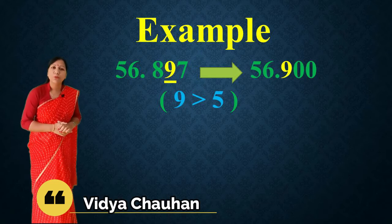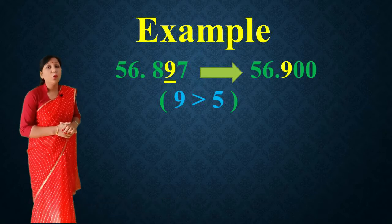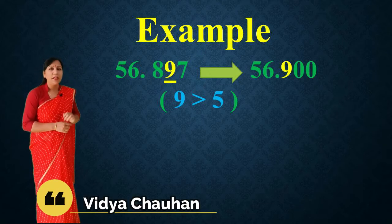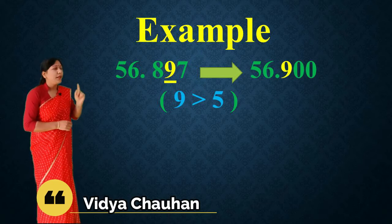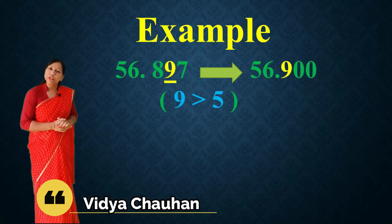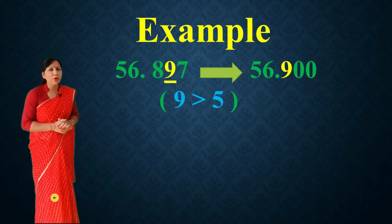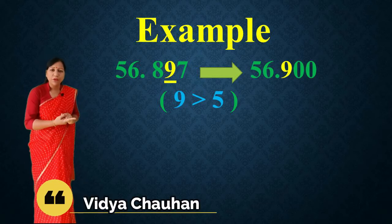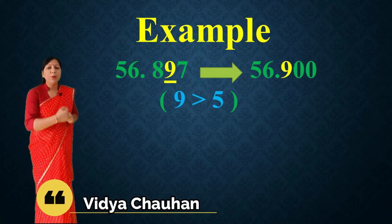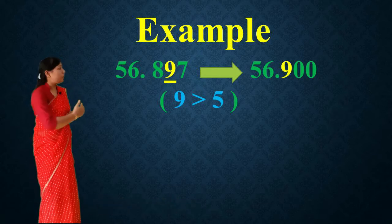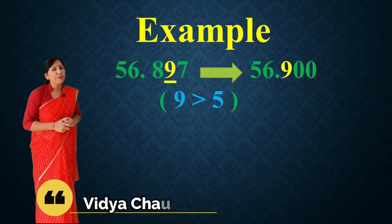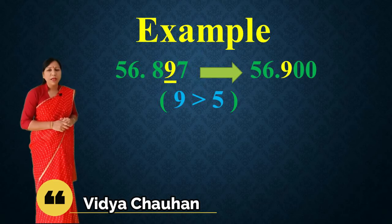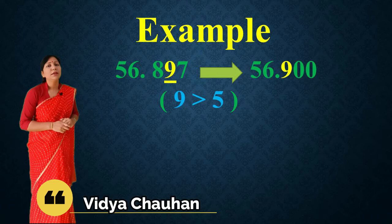For example, 56.897. The digit at the hundredths place is 9, and since 9 is greater than 5, we apply rule two: the tenths place digit — 8 — increases by one to become 9, and the rest of the digits become zero. So the rounded value of 56.897 is 56.9.